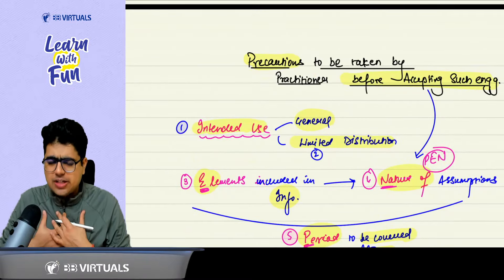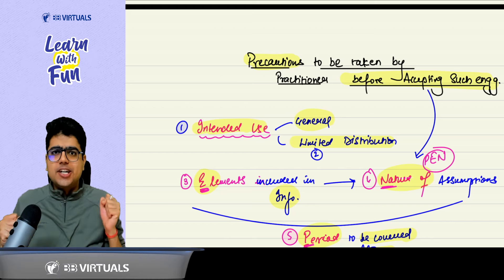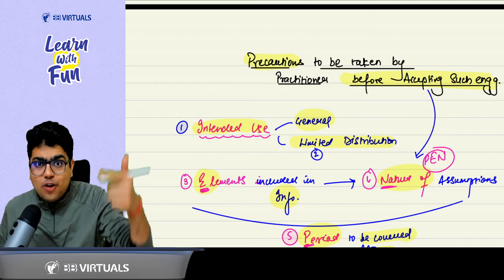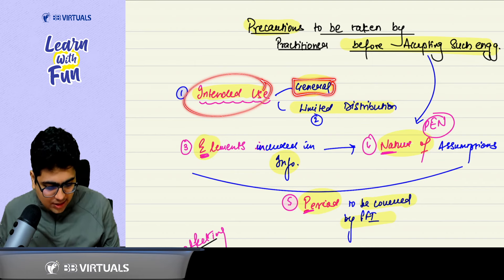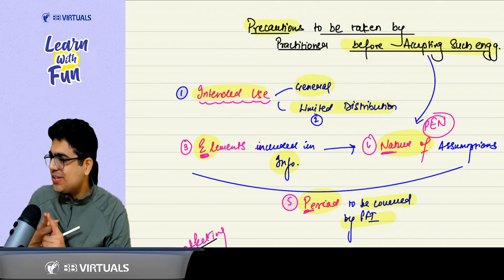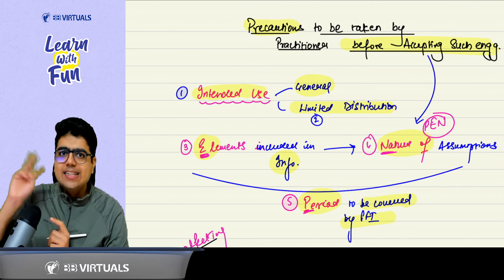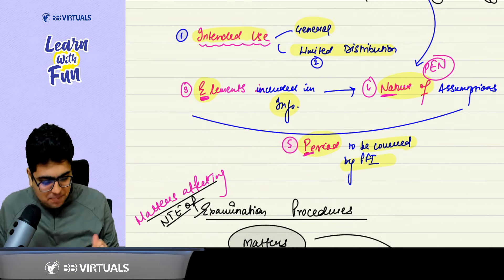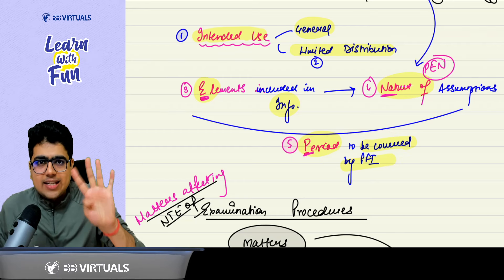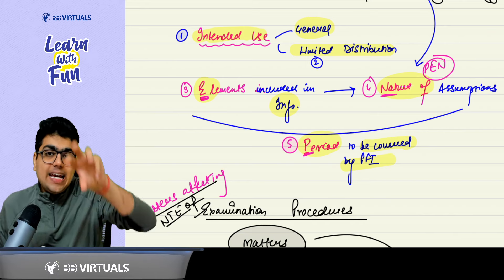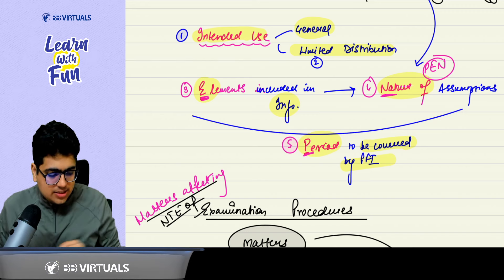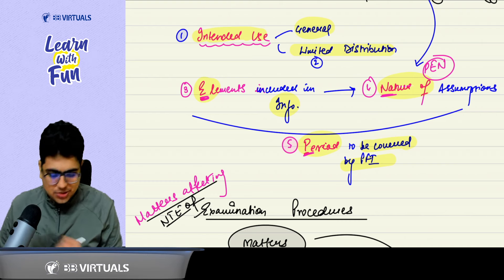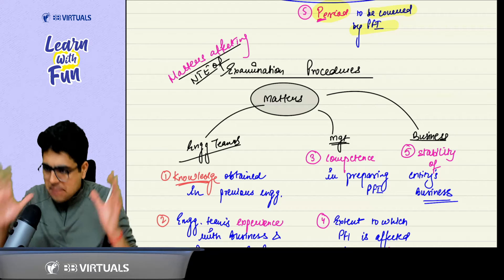Now the next topic: precautions a practitioner should take before accepting such an engagement. First, understand for whom the prospective financial information is prepared — a bank, an investor — what is the intended use, and whether it is for general or limited distribution. Then remember the mnemonic PEN: P for the period to be covered by PFI, E for the elements to be incorporated in the PFI including data and assumptions, and N for the nature of the assumption — whether best estimate or hypothetical.